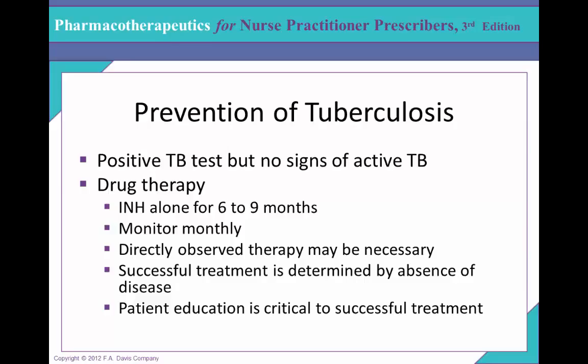For prevention: a patient with a positive TB test but no signs of active TB must be asked at every visit about cough, fever, night sweats, and dyspnea. If a person was exposed to an active TB patient, you can give isoniazid alone for six to nine months, monitoring for the same side effects even if the patient never developed symptoms. Directly observed therapy is recommended. Successful treatment is determined by absence of disease: negative sputum, negative chest X-ray, and no symptoms.